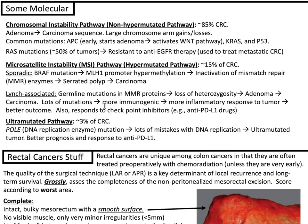The ultramutated pathway accounts for approximately 3% of colorectal cancers. It involves a POLE or DNA replication enzyme mutation, leading to many DNA replication errors and an ultramutated tumor. These tumors have better prognosis and respond to anti-PD-L1 therapy.